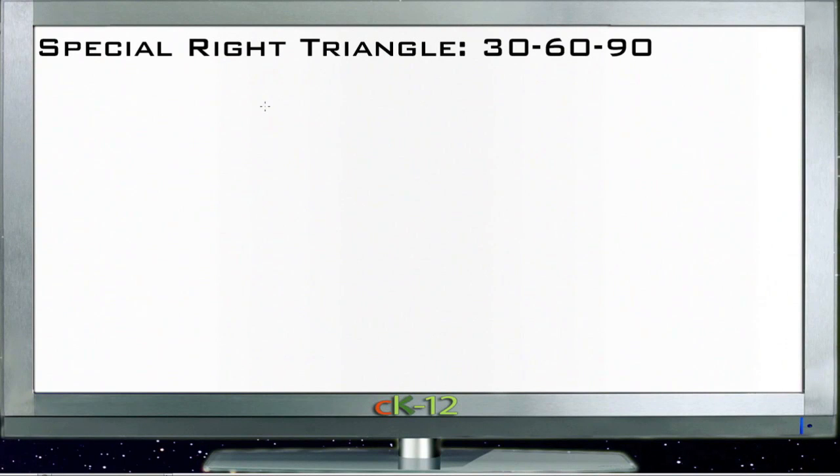The other special right triangle that's worth memorizing the values for is the 30-60-90 triangle. The 30-60-90 triangle is called that because of the angles, so if we draw a quick sketch of one here.